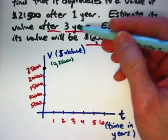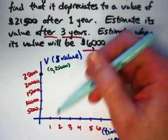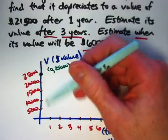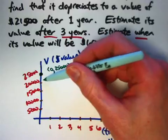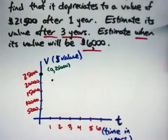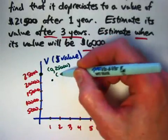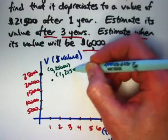It's depreciating to $21,500 after one year, meaning when t is 1, V is $21,500. Do your best, perhaps about there. That point is going to have coordinates one comma twenty-one thousand five hundred.